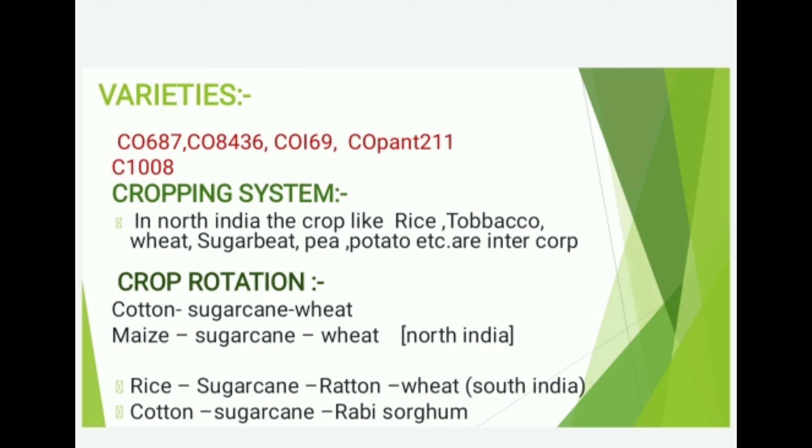Cropping System: In Northern India, the inter-crops include rice, tobacco, soybean, wheat, sugar wheat, pea, potato, etc.